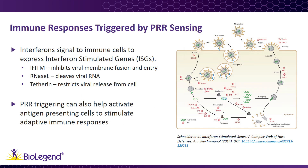PRR signaling leads to the production of cytokines that are important for regulating immune responses. One class of cytokines that is critical for the innate antiviral response is interferons. Interferons are divided into three types. Type 1, which includes interferon alpha and beta, primarily produced by innate immune cells such as macrophages and plasmacytoid dendritic cells. Type 2, which refers to interferon gamma, produced by a number of cell types including lymphocytes like natural killer cells and cytotoxic CD8-positive T cells. And type 3, which consists of interferon lambda subtypes that act primarily on epithelial cells on mucosal surfaces like the gut.